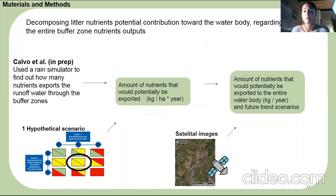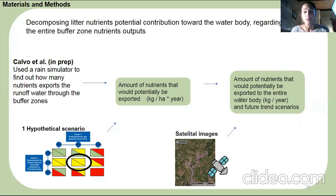In the context where buffer zones retain nutrients from runoff water, we evaluated the potential contribution of decomposed litter nutrients to the water body, relative to the entire buffer zone nutrient outputs. We used the annual total nutrient load average in surface runoff published in the article of Calvo et al. To do so, we used the intermediate hypothetical scenario and estimated the amount of nutrients potentially exported to the water body using the total area occupied by each buffer zone, extracted from the satellite processing.